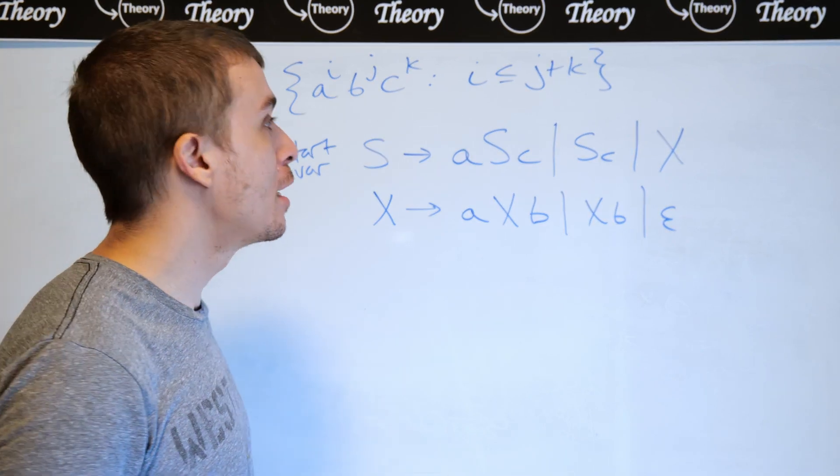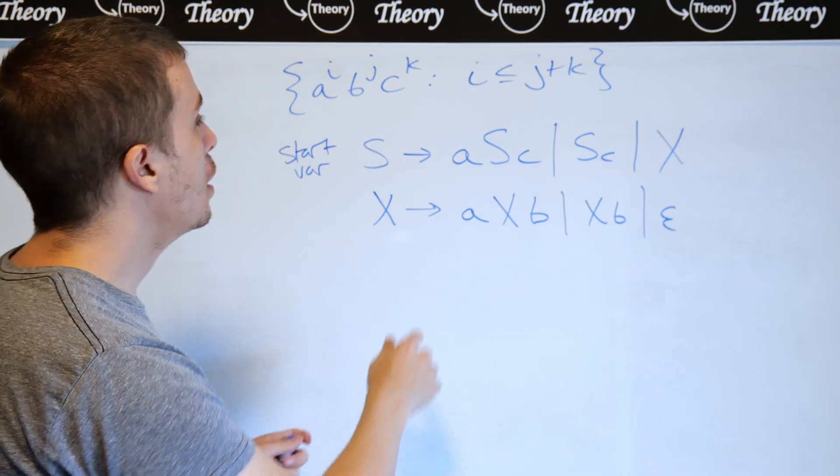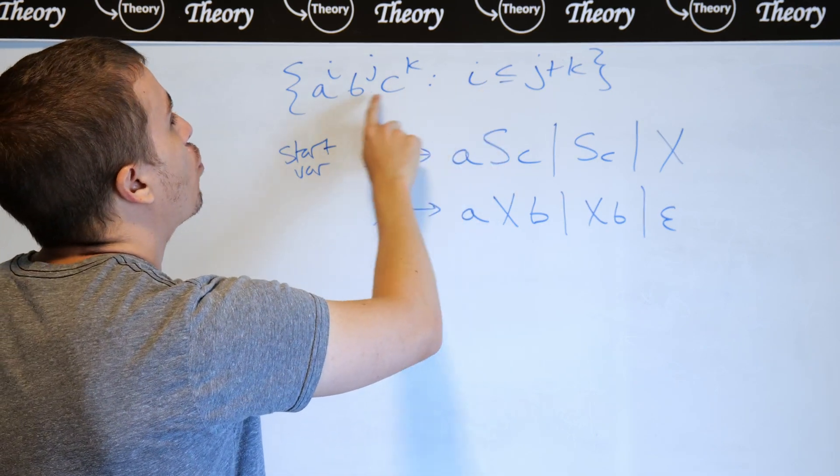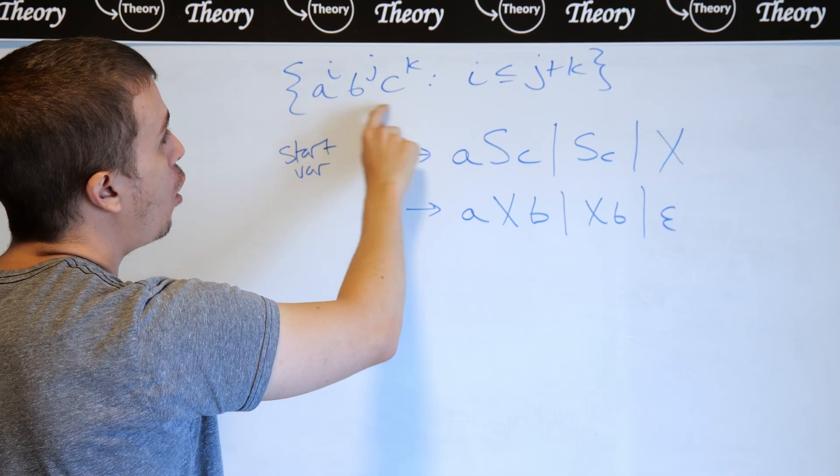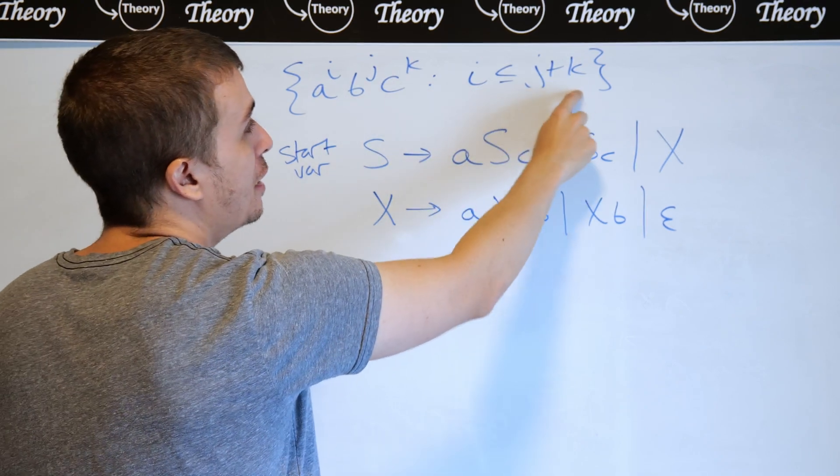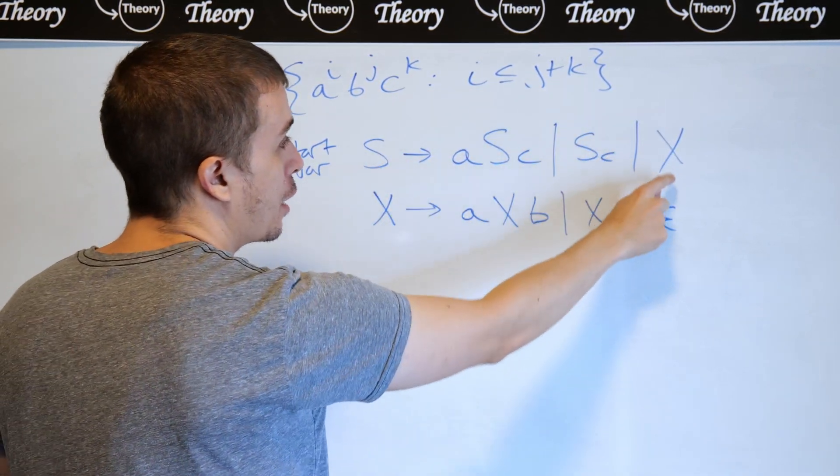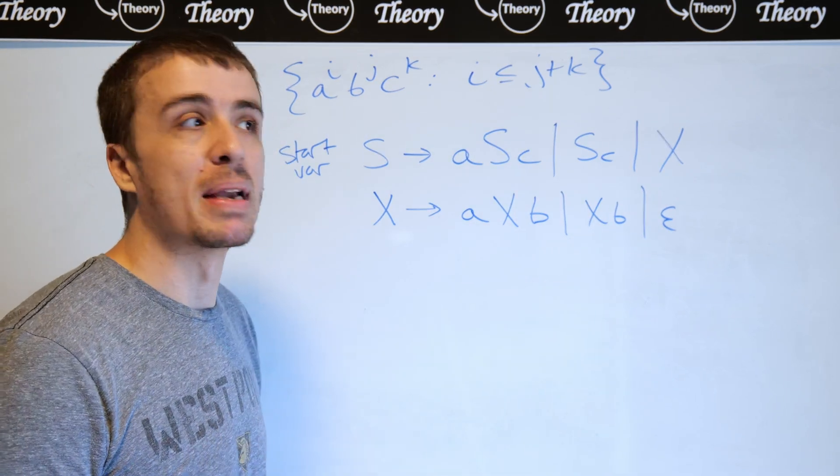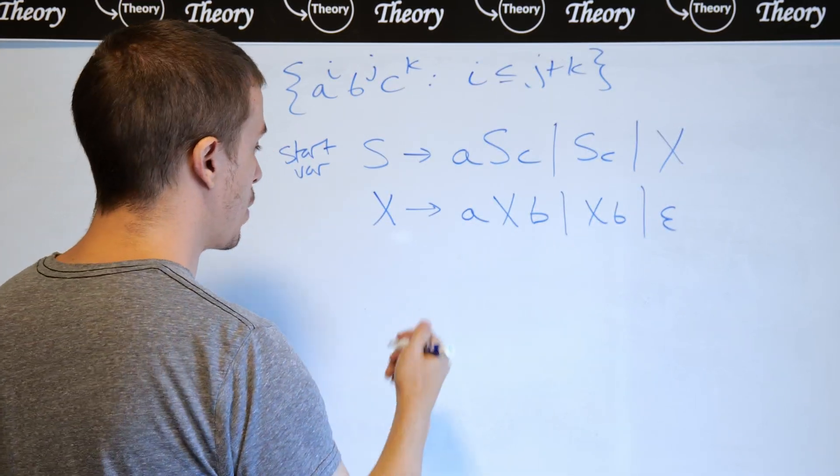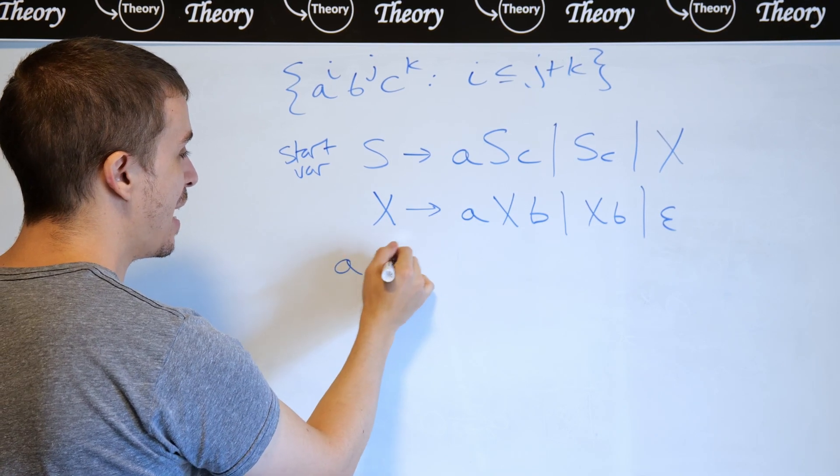So let's consider the pathological case of the empty string. So is the empty string in here? Well, if the empty string's in here, then all three variables are zero, and zero satisfies this equation for all three, and I can go through fairly easily to make the empty string. So if we look at any random string, I'm just going to pick one out of a hat.